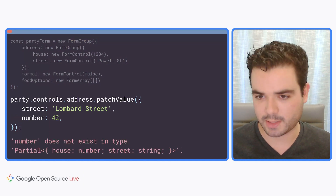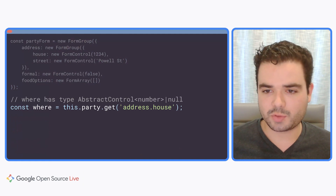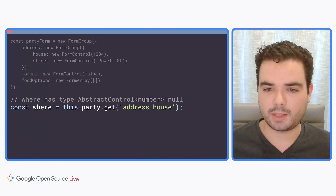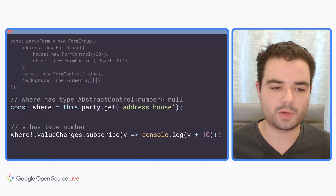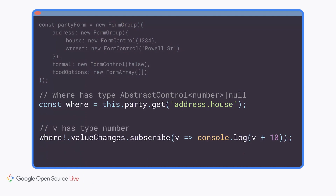Number does not exist — unexpected type. We also get the benefit of strong types when navigating fields with the .get method. We even have types in our callback functions. We can subscribe to value changes on our form group, receive an update whenever that value changes, and the type of the callback argument will be number. If we try to use it as something other than a number, that's a static type error.